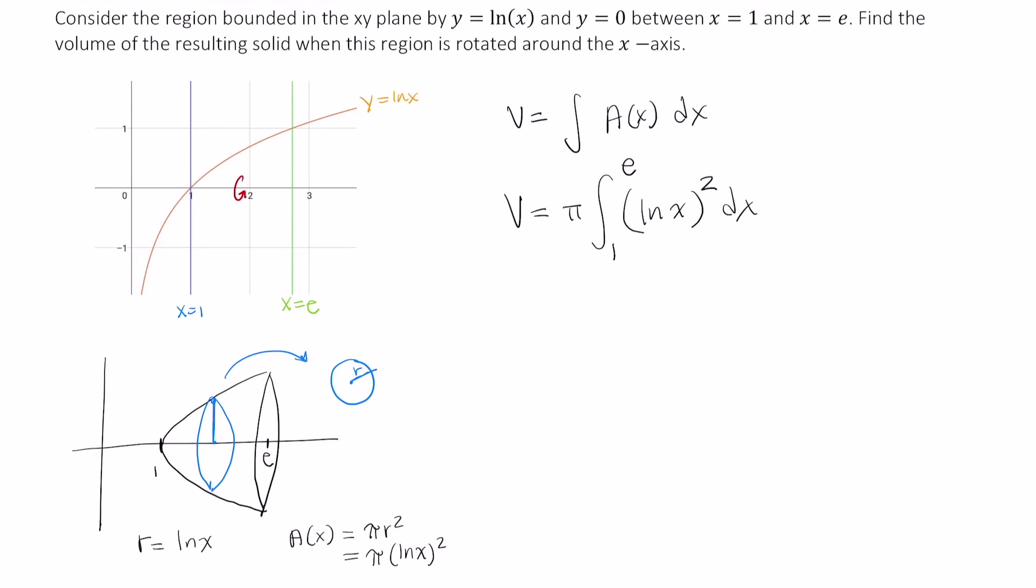OK, so here's the integral representing the volume of this solid of revolution. And let's use parts to evaluate it. So let u equal ln of x quantity squared. Then dv is equal to dx, so v is equal to x. That one's fairly straightforward. The derivative of this we have to find using the chain rule. So du is equal to 2 times ln of x times 1 over x dx.